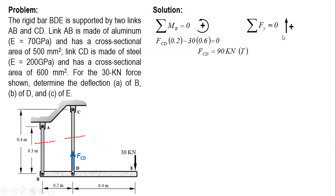we sum up force vertical. F_CD 90 minus 30 minus F_AB. And F_AB is equal to 60 kilonewtons compression.